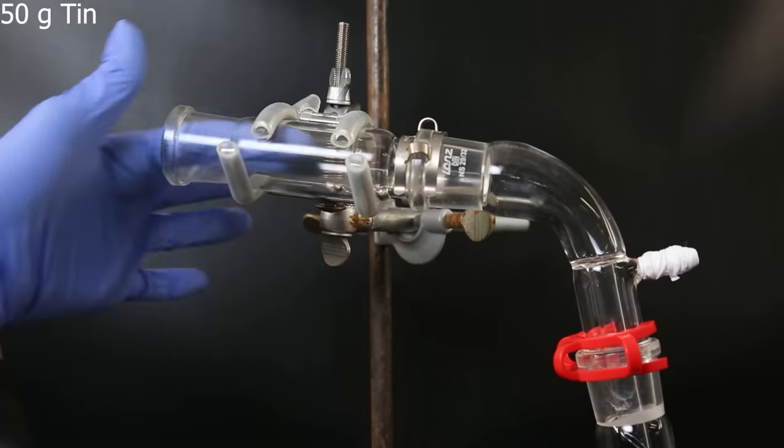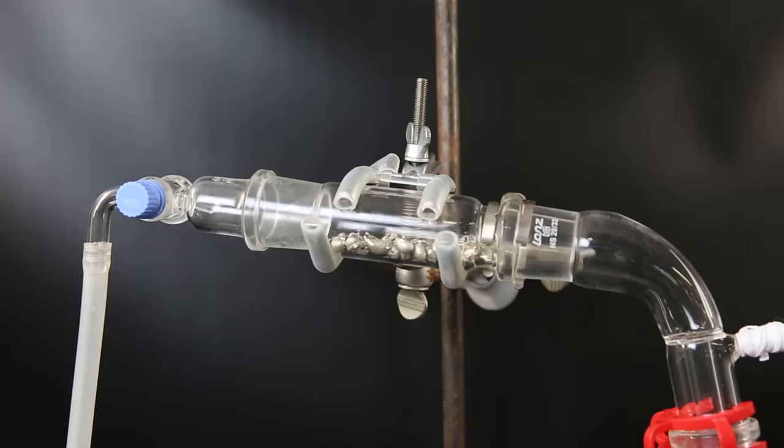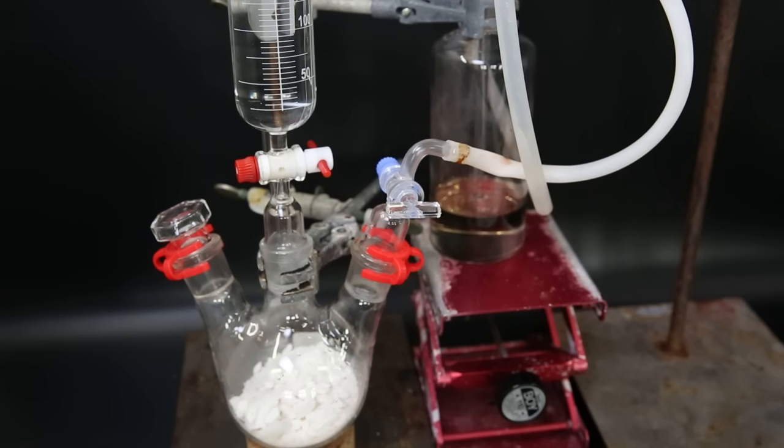So I load up the adapter with about 50 grams of tin and then close it off again. I put a bunch of TCCA in the flask and 37% hydrochloric acid in the dropping funnel. Now that everything is complete, I can start the reaction.